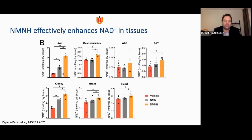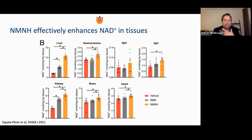What happens in the tissues? Same as with cells — especially in liver — we see that NMNH is very potent. With NMN there's a doubling of NAD levels in the liver, which we were always very positive about. But with NMNH, it's a fourfold increase. Even in tissues that are notoriously more difficult to elevate NAD levels in — like gastrocnemius muscle and brain — they do respond to NMNH, although not spectacularly. The majority of the NAD increase is observed in liver and kidney, which are always the most responsive tissues for these treatments.